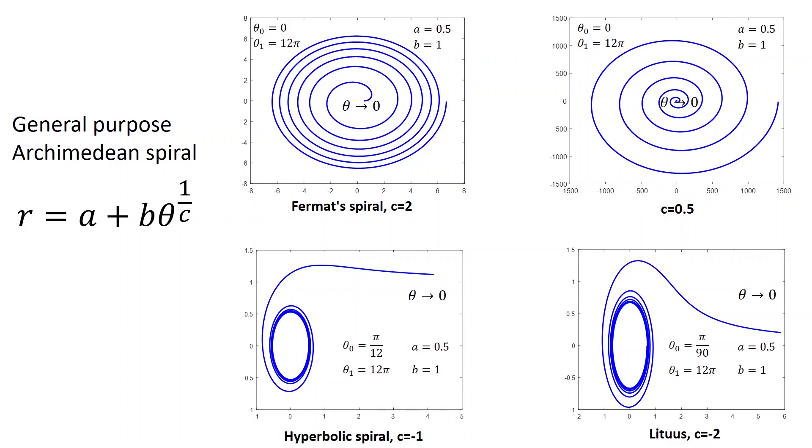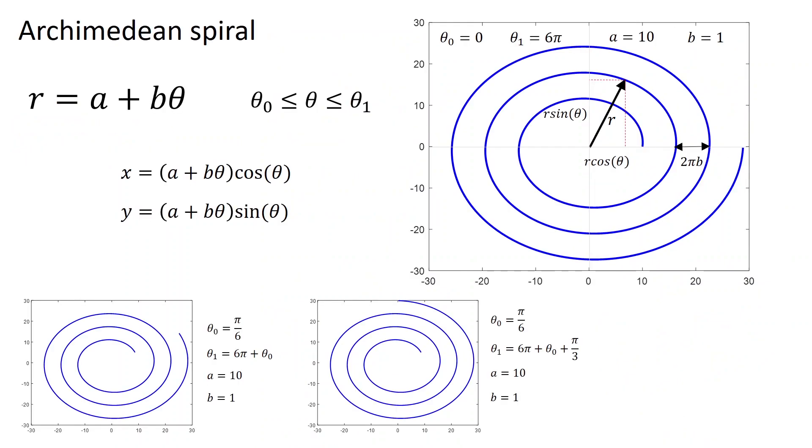So this is basically the different types of spiral if you want to create. Now we use this information, actually we are going to use this information, to draw a parametric curve in COMSOL, and create this type of structure in COMSOL.